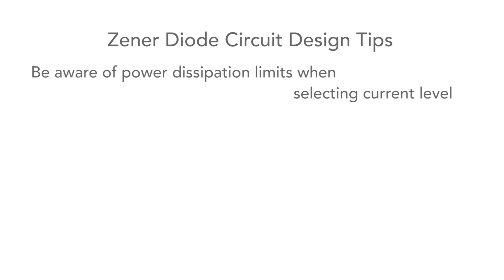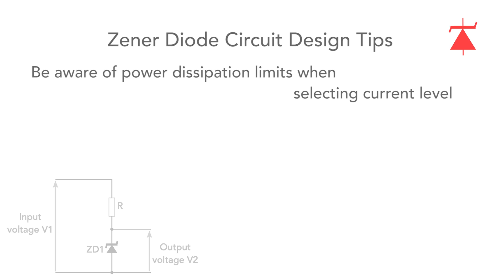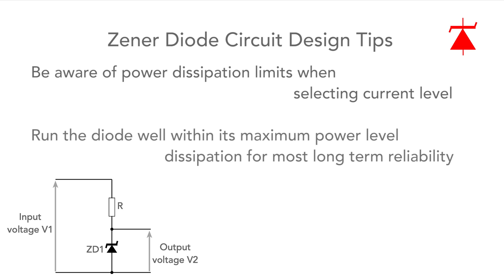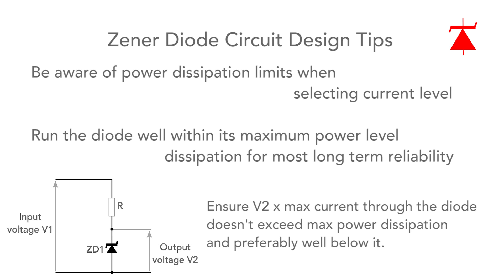At the other end of the scale, don't run too much current through the diode, because they only have a certain limited amount of dissipation. Make sure that in the worst case, the current isn't such that they exceed their maximum power dissipation. In any case, it's always best to run any component well within its maximum limits.